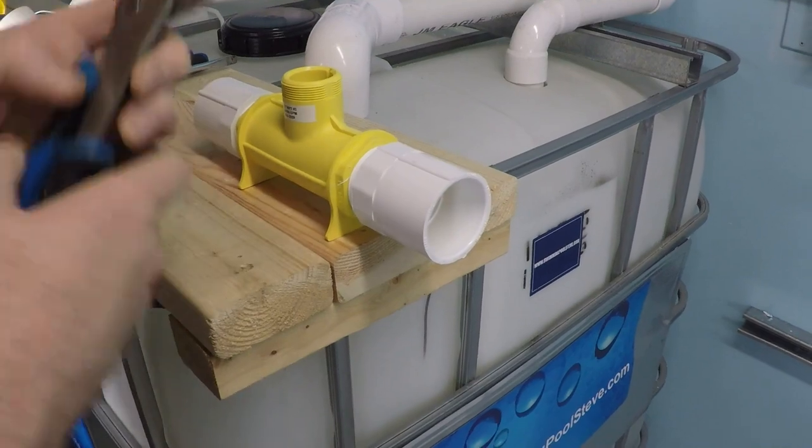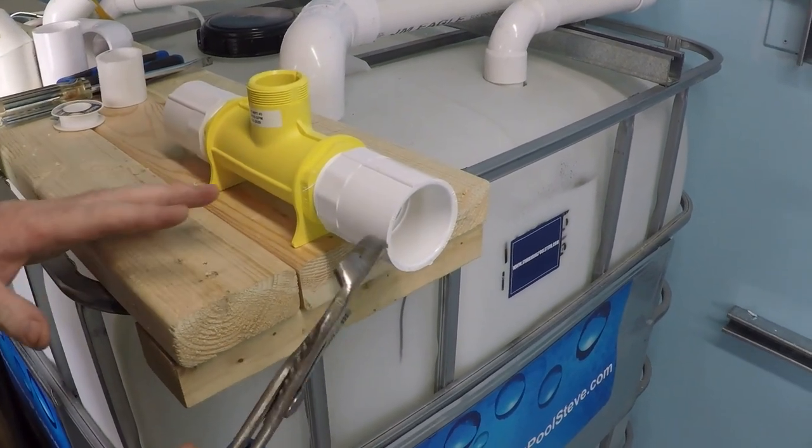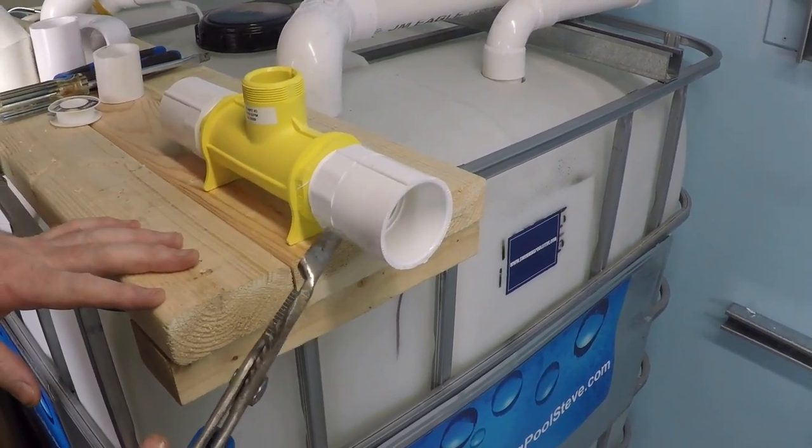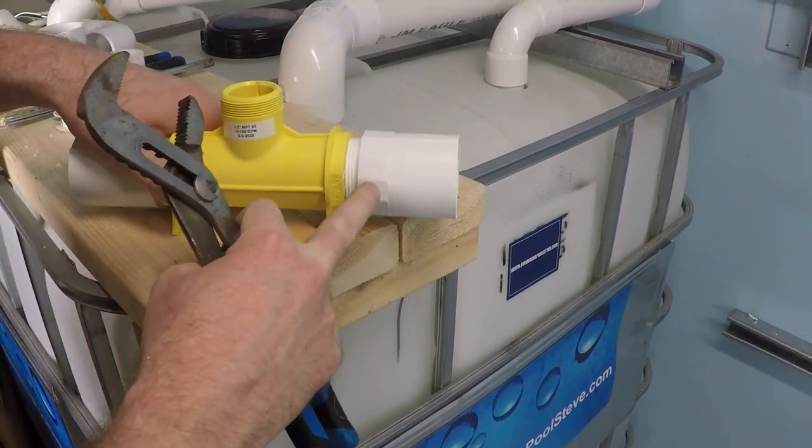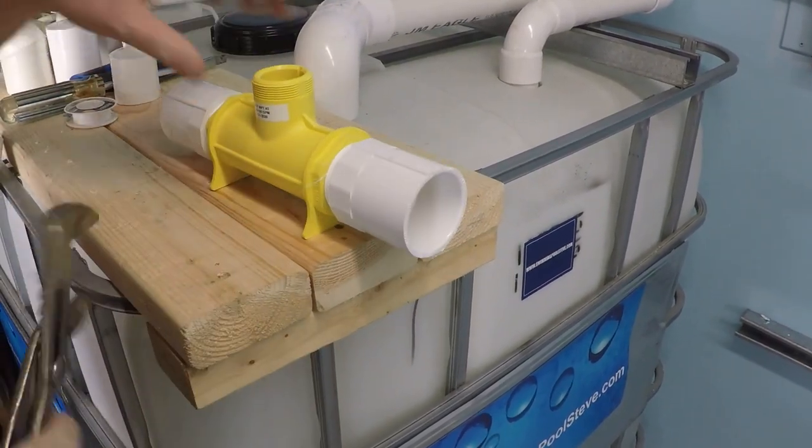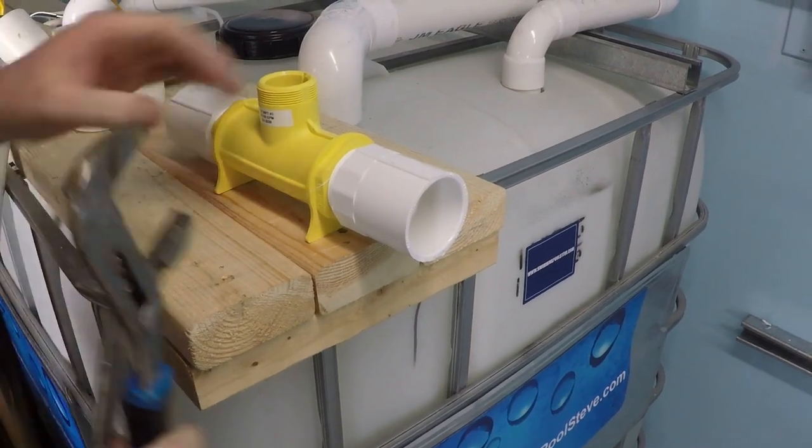So from this point here, what you want to do is you only want to go about a quarter turn to a half turn more. That's it. That's all you want to do. You definitely don't want to keep spinning it and spinning it until all the threads are gone. That's not what you're going after here.